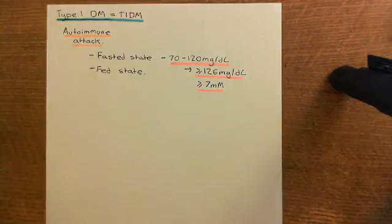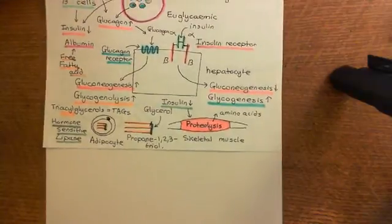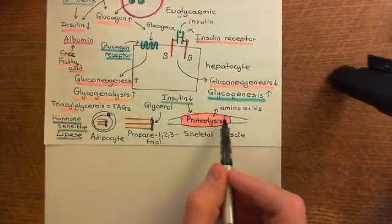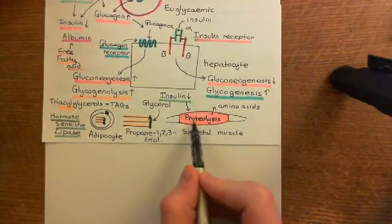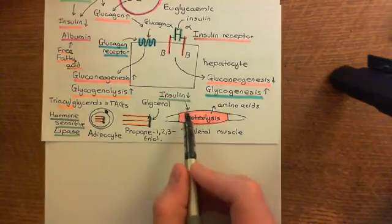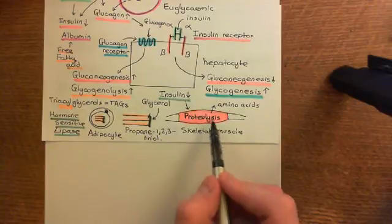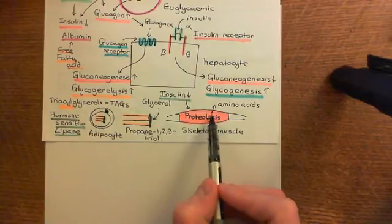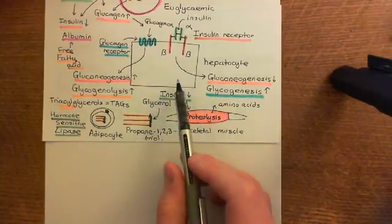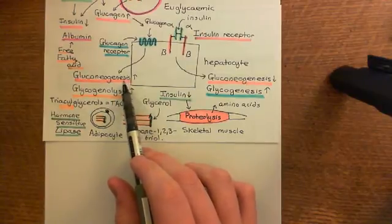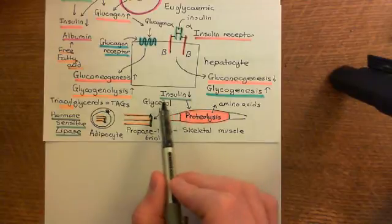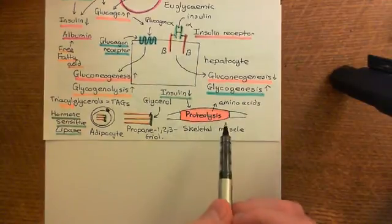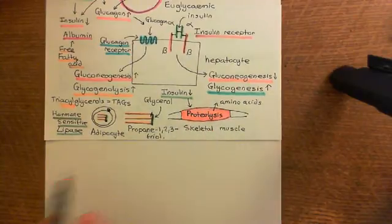Now let's talk about the other effects in the fasted state, because these will become important later on. Insulin being low also has effects on the skeletal muscle and the adipocytes. Low insulin in the skeletal muscle cells promotes proteolysis — when skeletal muscle cells don't get much insulin, they start breaking down proteins and releasing them into the blood as amino acids. Those amino acids can then go to the hepatocytes and be used as starting materials for gluconeogenesis. If insulin goes hugely down because we've lost our beta cells, we're going to get much more proteolysis and loss of skeletal muscle proteins.